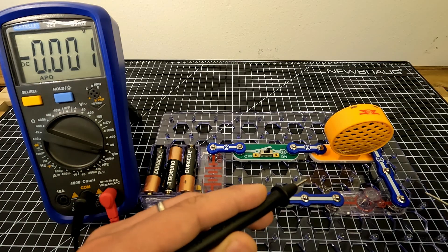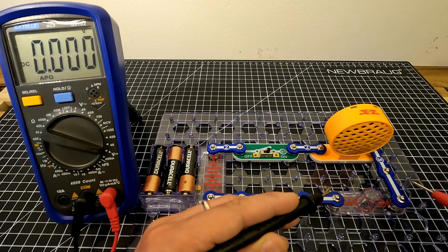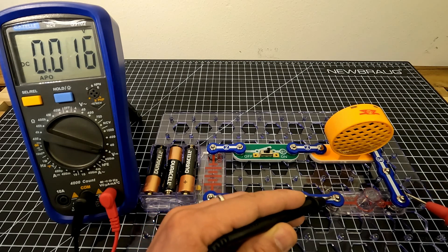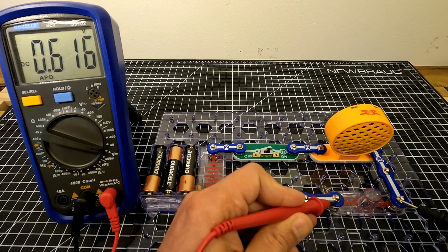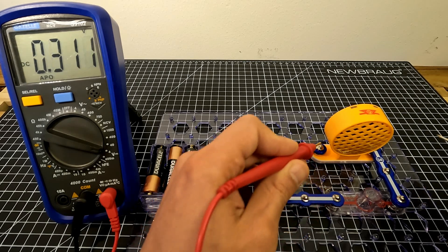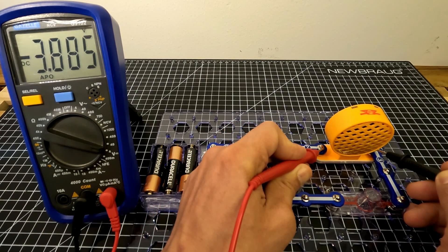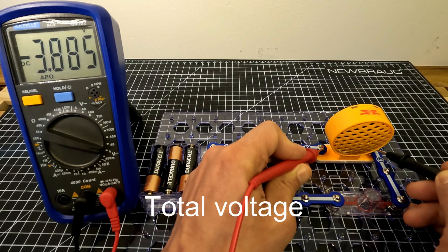Definitely the two loads are sharing the voltage from the battery. For example, here we have 0.616 volt, and then when we check the speaker, 3.885 volts. Then same thing - if you add the two volts, that's our total voltage range.